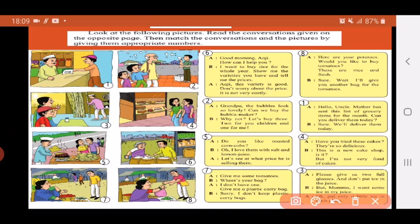In picture number six you can see an old lady come to a shop and there are some sacks of rice. So let's read the first conversation box. The shopkeeper man in the shop says, Good morning, aji. Aji we call for grandmother. How can I help you?